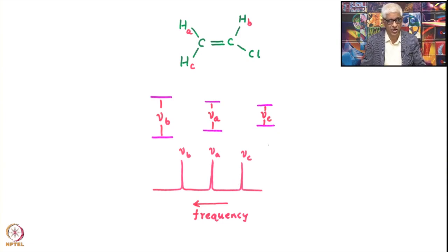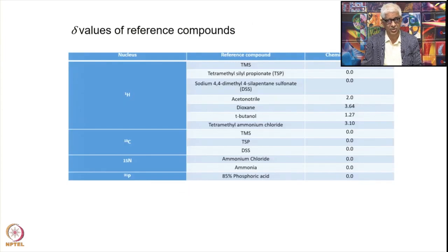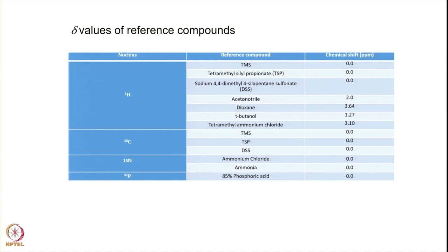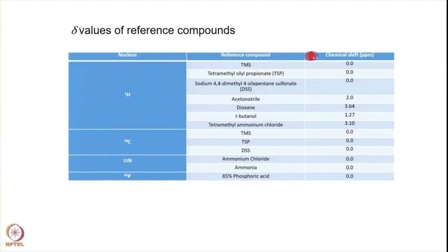Chemical shift occurs because of screening by the electron cloud, and it is an important parameter describing the electronic environment and molecular structures. For the proton, reference compounds include TMS (tetramethylsilane), whose single line is taken as 0.0 ppm. TMS is used when the solvent is chloroform, DMSO, or similar solvents. It is the most upfield signal due to highest screening from its three methyl groups on silicon — Si(CH3)4.